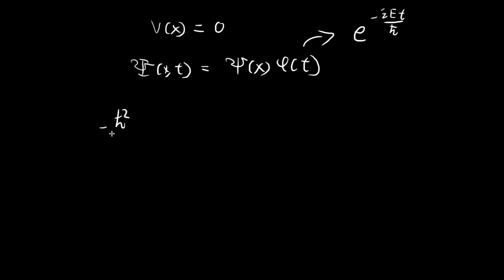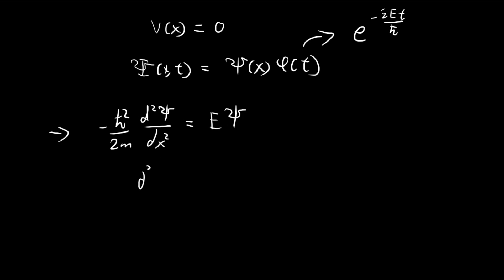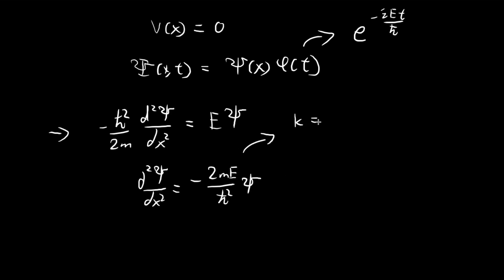In order to solve the time-independent Schrödinger equation, we need to consider this expression. For this potential, this is the corresponding time-independent Schrödinger equation. We can solve it by rearranging the terms, and then I'm going to define a new symbol k, equal to the square root of 2mE divided by ħ. You can see this is just k squared, so we have the second derivative equal to negative k² times ξ.